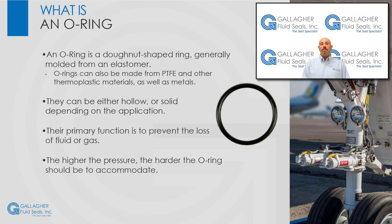O-rings are most commonly manufactured from an elastomer. The pliability of the material allows the O-ring to take the shape of its hardware. The hardness of the O-ring material should be considered relative to the pressure of the fluid — the higher the pressure, the harder the O-ring should be. We will discuss more about this when we discuss O-ring failure modes.